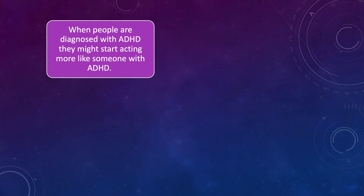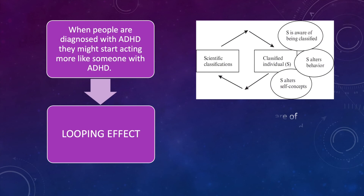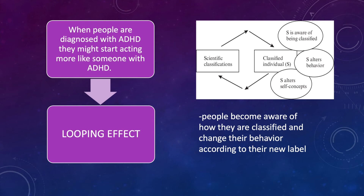When people are diagnosed with ADHD, they might start acting more like someone with ADHD. Ian Hacking calls this the looping effect, which is when people become aware of how they are classified and change their behavior according to their new label. In turn, society has to change its classification of them. When we label a person as having ADHD, we turn this phenomenon into being, which in turn brings back a self-fulfilling prophecy — because you are labeled this, you are going to act like this.